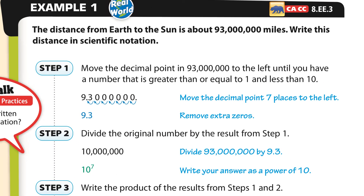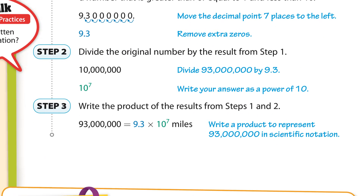Example 1: write 93 billion miles in scientific notation. First, create a number between 1 and 10 by placing the decimal to get 9.3. Then count how many times we move it: 1, 2, 3, 4, 5, 6, 7 times. So that's 10 to the 7th. Put it all together: 93 billion is 9.3 times 10 to the 7th. Scientific notation done.